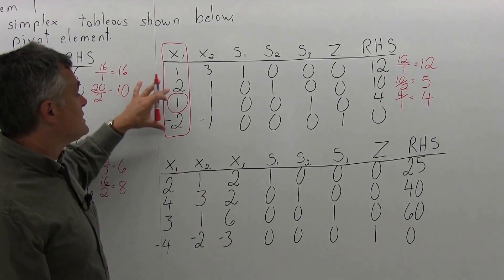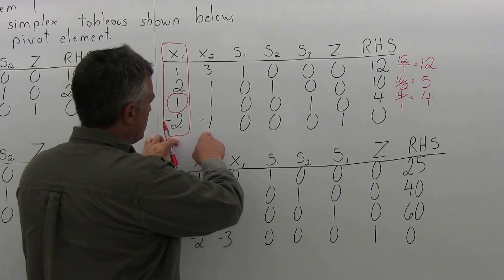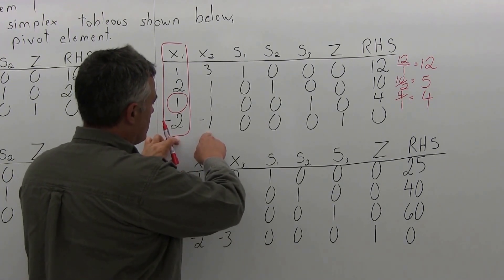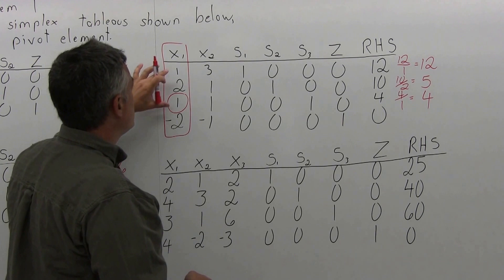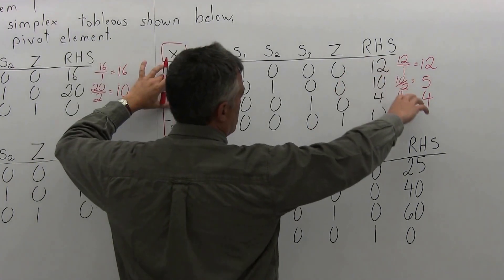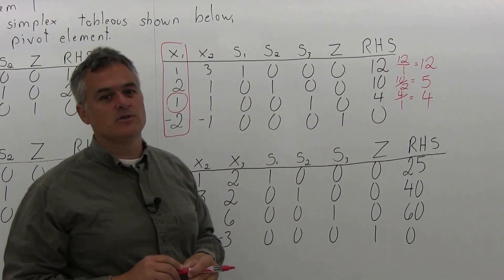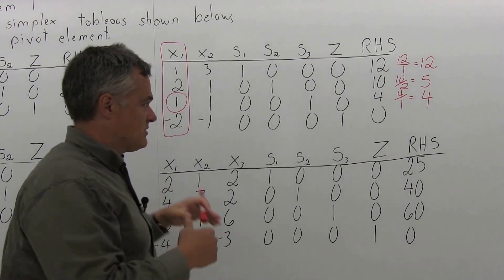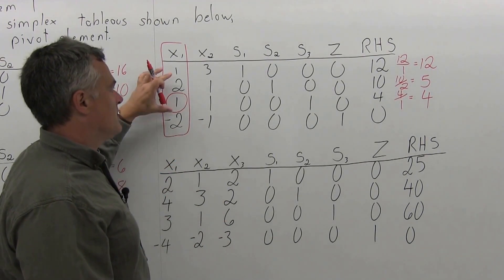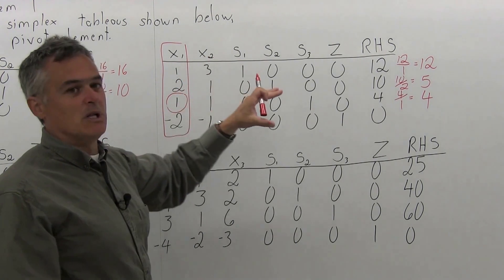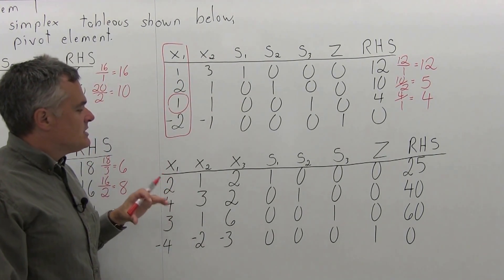To finish the pivot, you would zero out the rest of the column — this element is already a 1. As a reminder, if there is a tie for the most negative value in the bottom row, you can choose either one. And if there's a tie for the smallest positive ratio, you can also choose either one. But in this case, there was clearly a most negative value and a clearly smallest positive ratio.